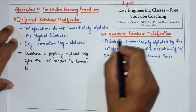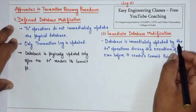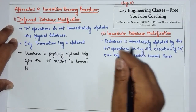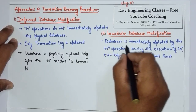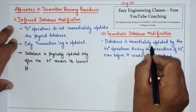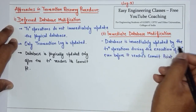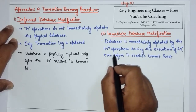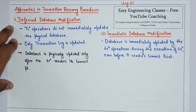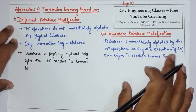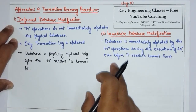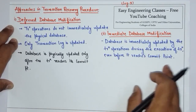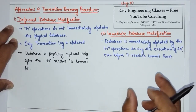The second approach is immediate database modification. It says the database is immediately updated by the transaction operations during the execution of the transaction, even before it reaches the commit point.